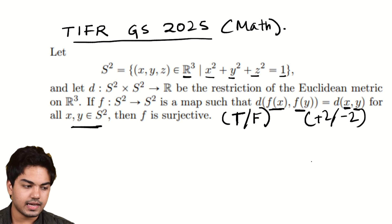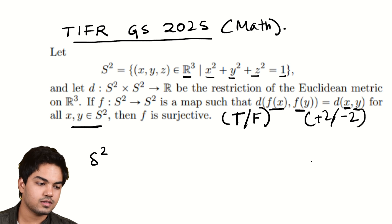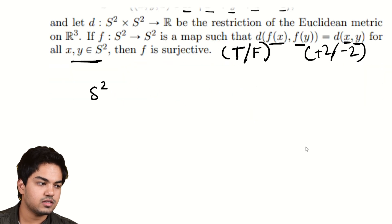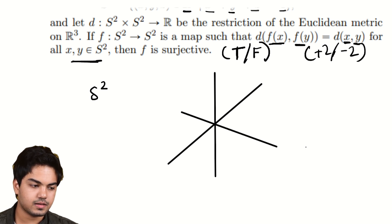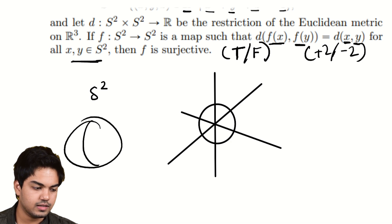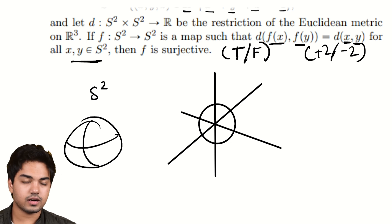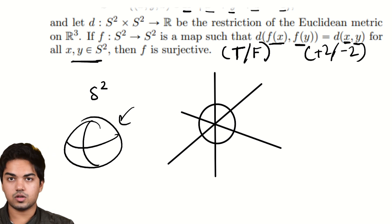But let's unpack. What is S²? S² is nothing but the unit sphere. It's just the spherical shell around the origin. So this is three dimensional space. S² is nothing but the unit sphere. We're just looking at the sphere, the surface of the sphere.